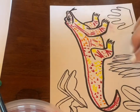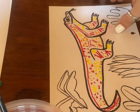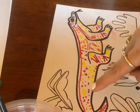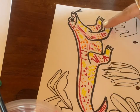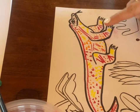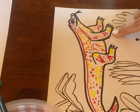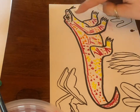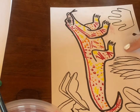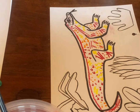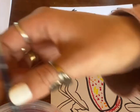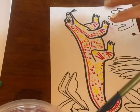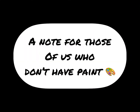As you can see, I have done all of these patterns all over my Komodo dragon. Obviously you can do your own patterns — whatever you'd like, whatever you think looks good. Now what we're going to do is we are going to do dabs of color. A note for those of you who don't have paint — please don't panic.